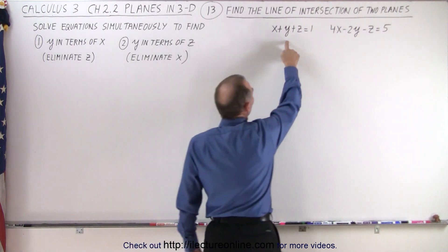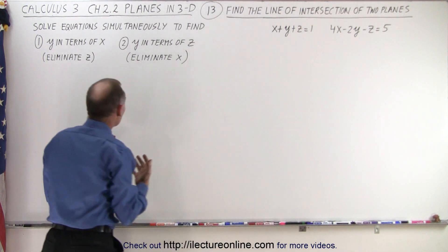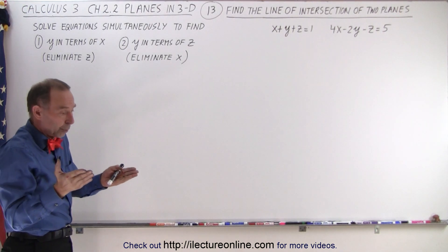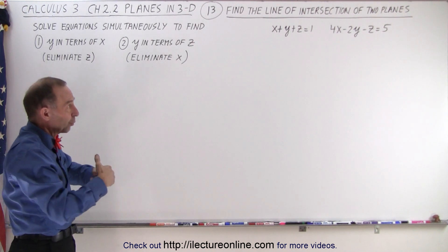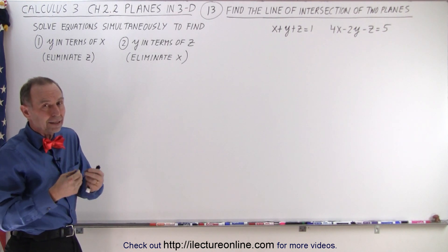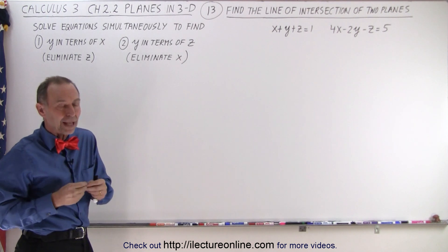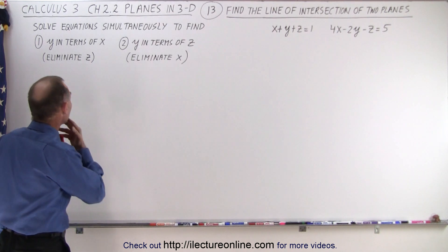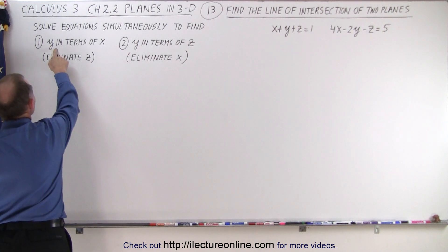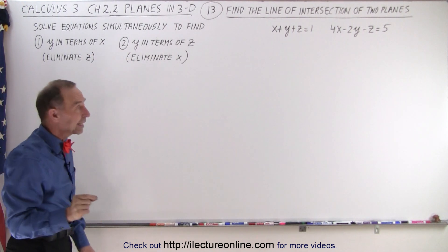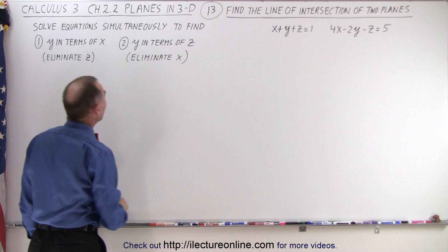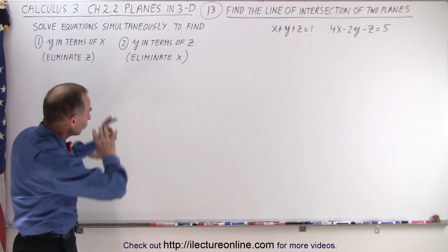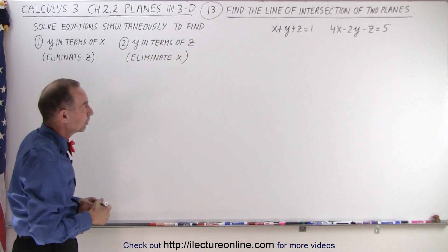Here are the two equations of the two planes. The way to go about it is to solve those two equations simultaneously. After all, where the two equations meet, that's where the line is — where x, y, and z should be the same for both planes at the same time. Of course there's going to be an infinite number of combinations of that which make up a line. So first we're going to find y in terms of x by solving those two equations simultaneously by eliminating z, and then we're going to solve y in terms of z by eliminating x. You can do a different combination — that's one of the ways we can approach it.